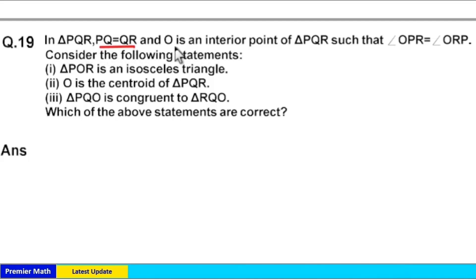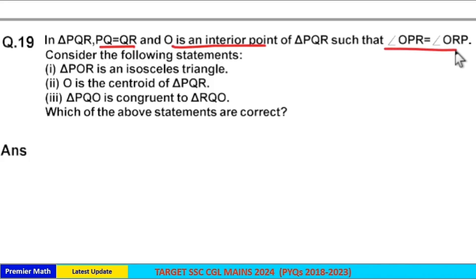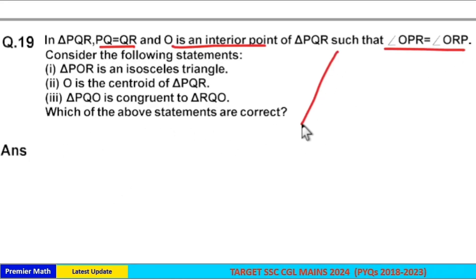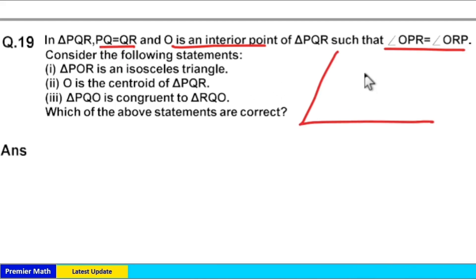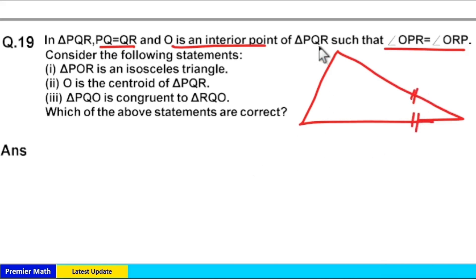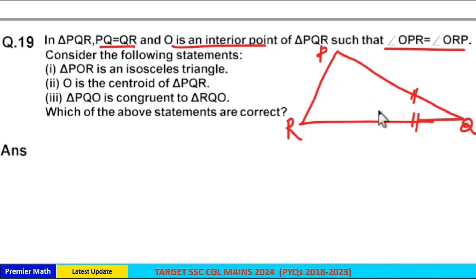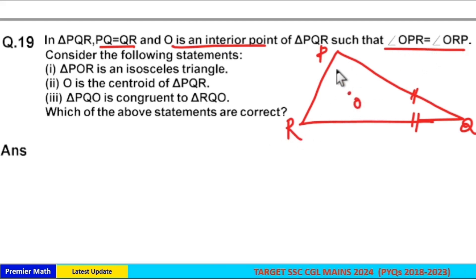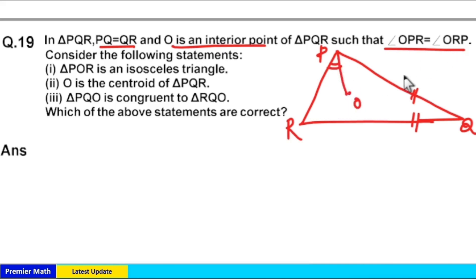In triangle PQR, PQ is equal to QR, and O is an interior point of triangle PQR such that angle OPR is equal to angle ORP. Consider triangle PQR with two equal sides PQ and QR. O is an interior point — we don't know where it's situated — and angle OPR equals angle ORP.